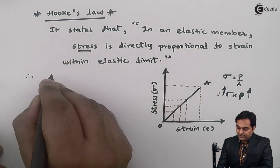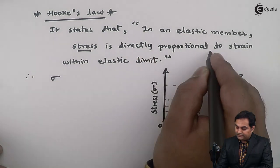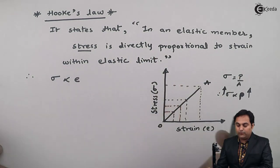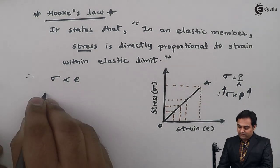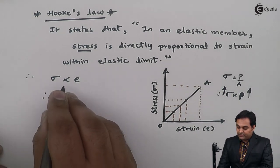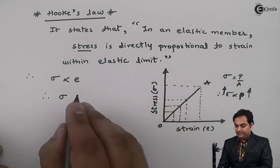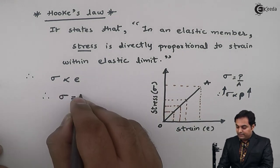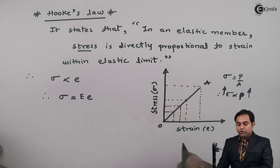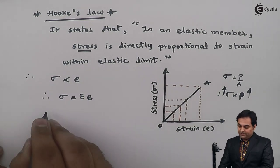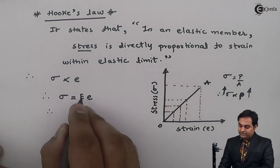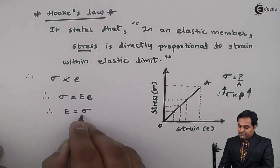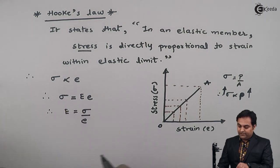Stress sigma is directly proportional to strain epsilon. Therefore, removing the proportionality sign, stress equals a constant called the modulus of elasticity. Hence capital E is written as stress upon strain: E = σ / ε.